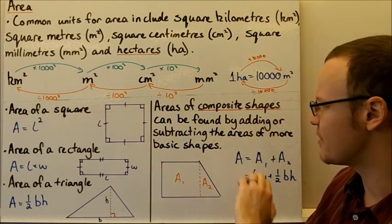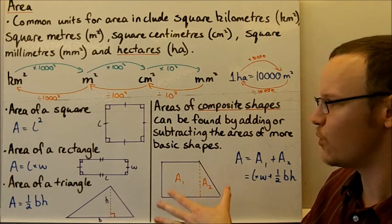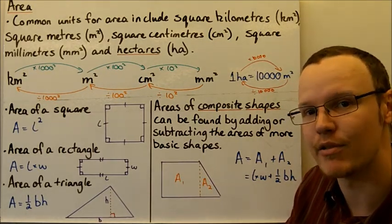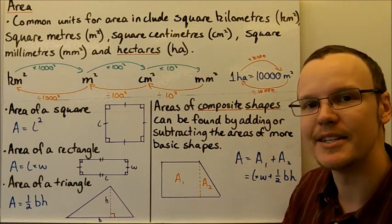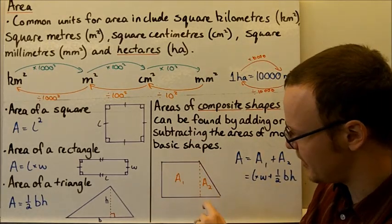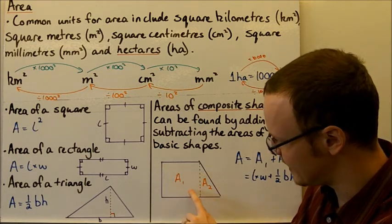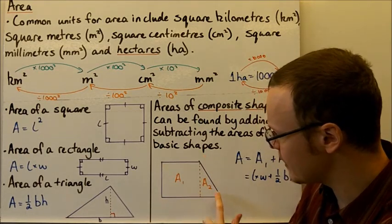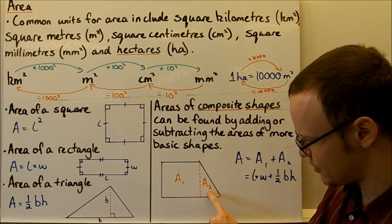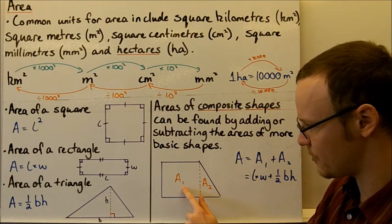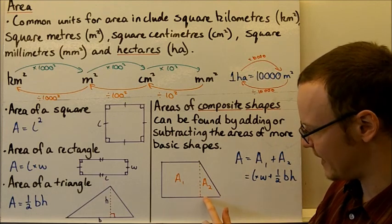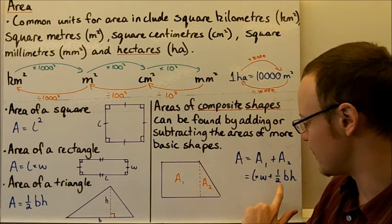The areas of composite shapes can be found by adding or subtracting the areas of more basic shapes. If we can divide a shape into more basic shapes, we add or subtract those areas to get the total. Composite means composed of more than one basic shape. For example, this shape can be divided into a rectangle (area one) and a triangle (area two). The total area equals area one plus area two: length times width for the rectangle, plus one half times base times height for the triangle.